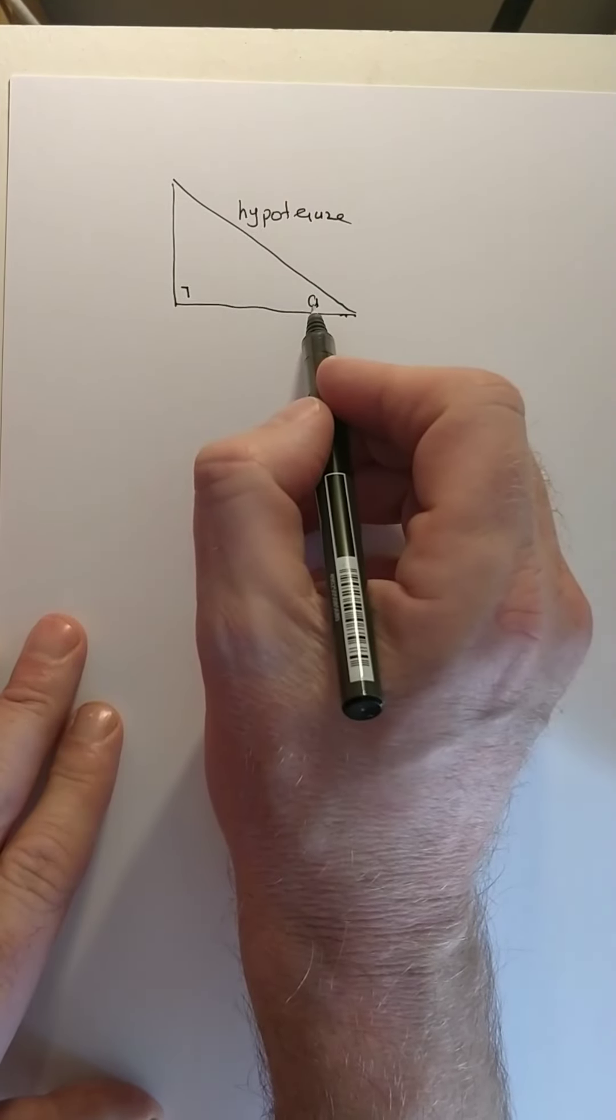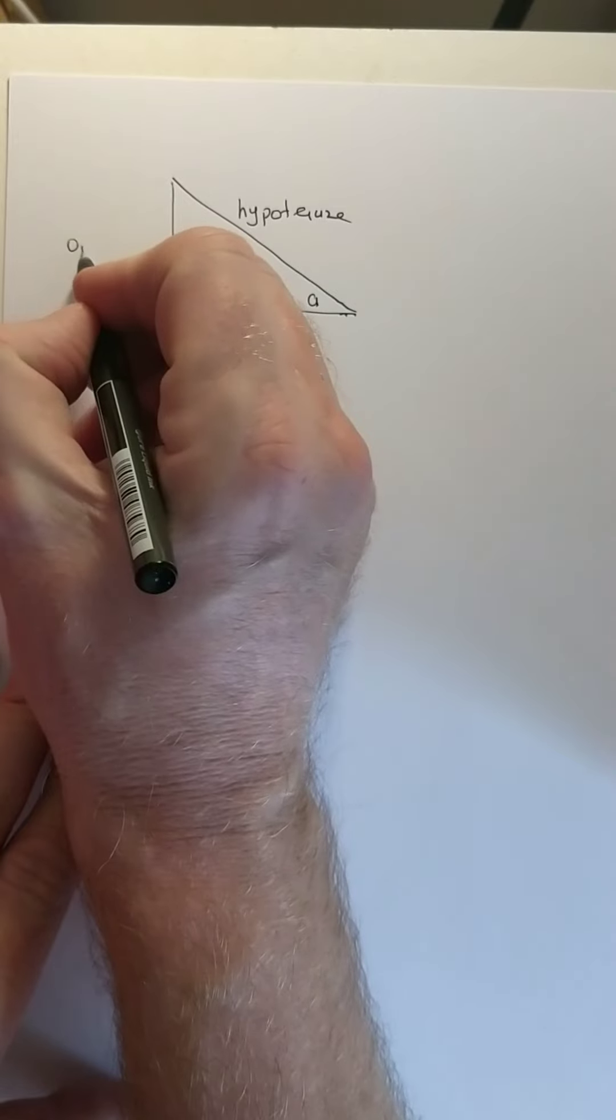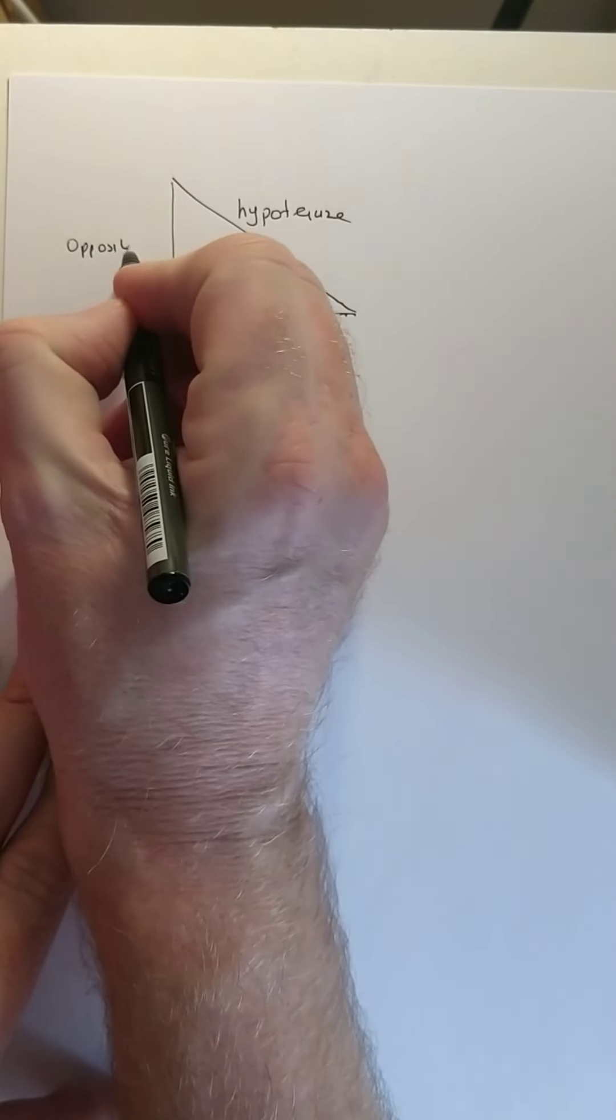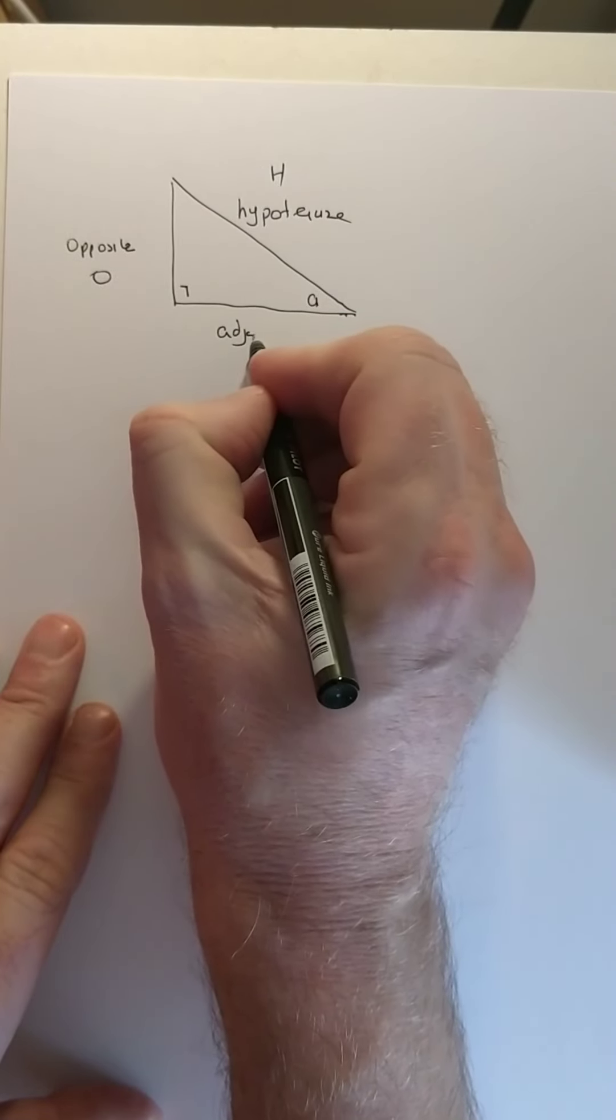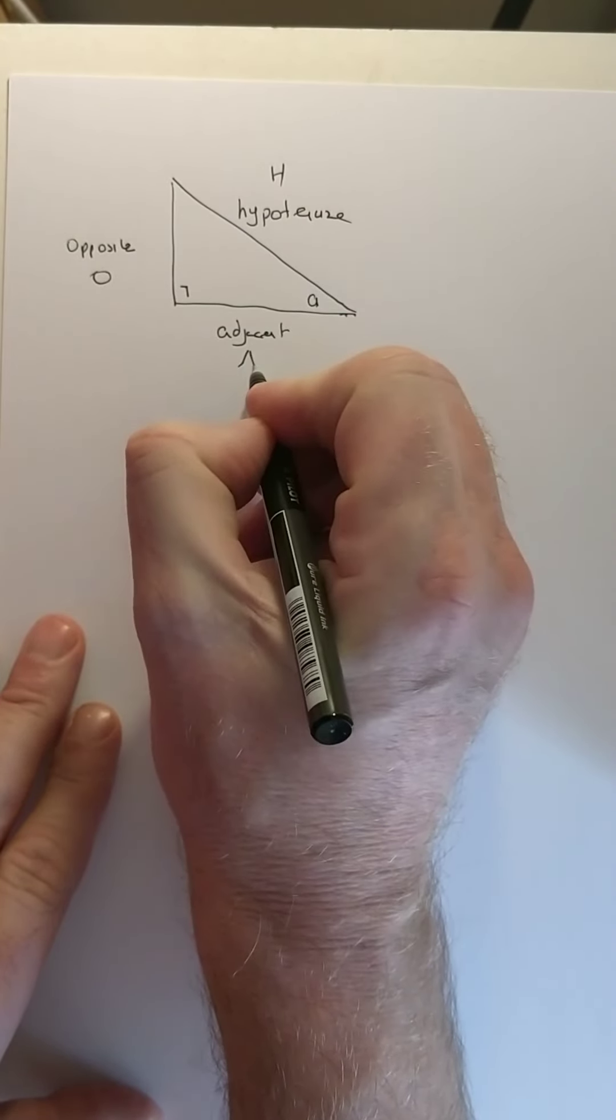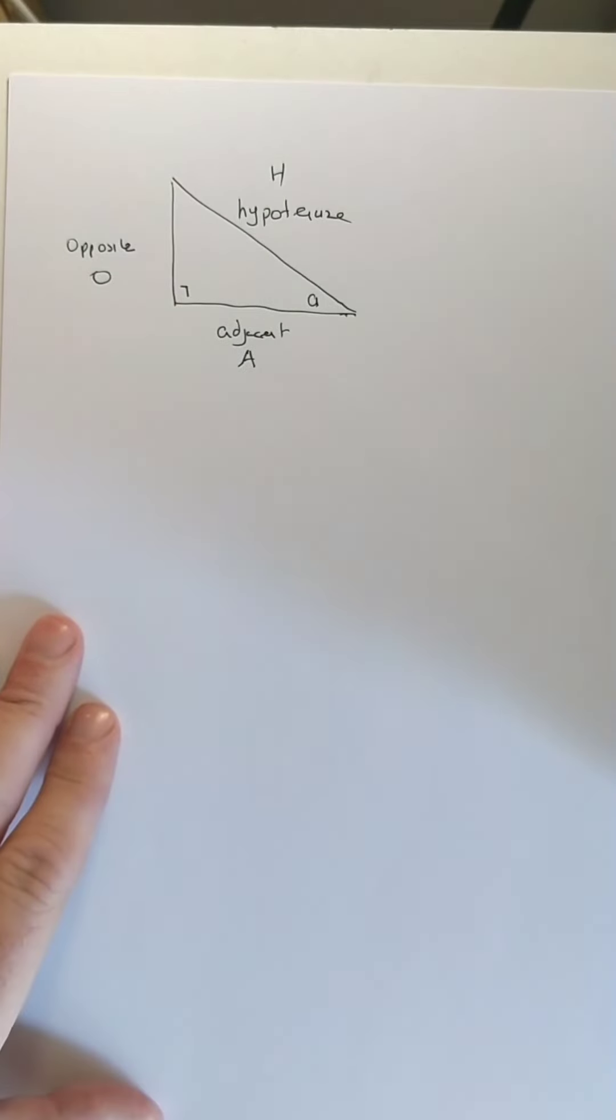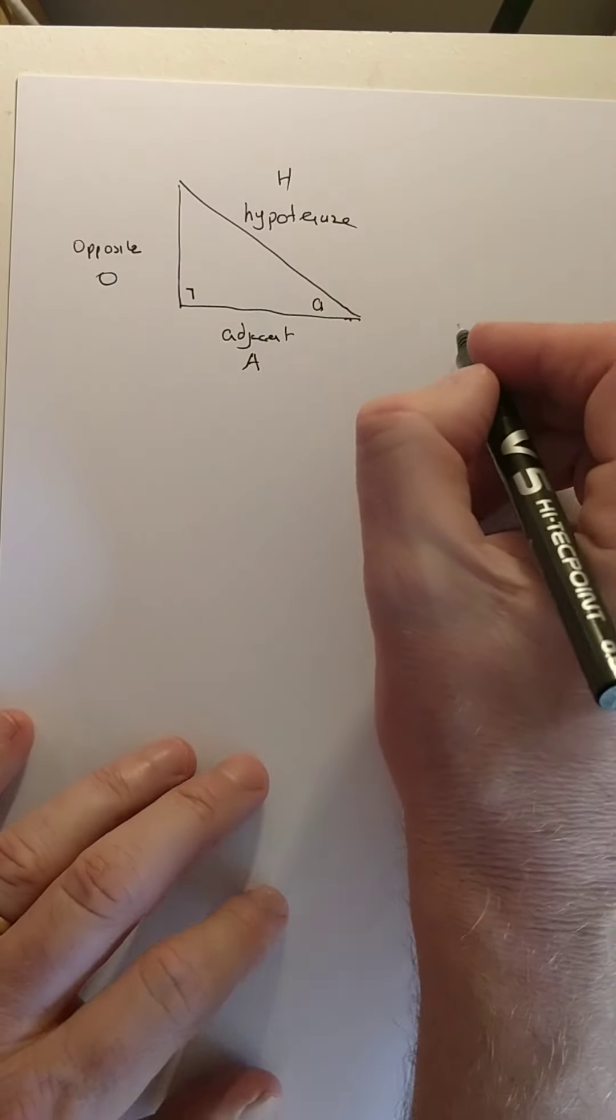Now, remember the idea. If you're standing here, this is opposite you. O-P-P-O, opposite, capital O. This is the hypotenuse, and this is adjacent to you. I would call it capital A to keep it separate from small A. That's the bottom line. And remember you have to learn SOHCAHTOA.